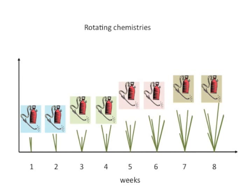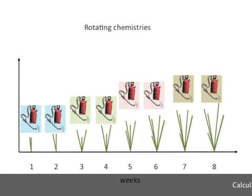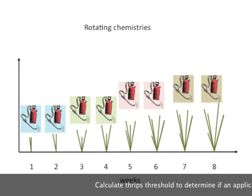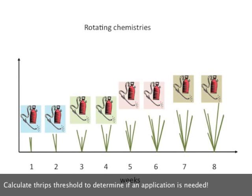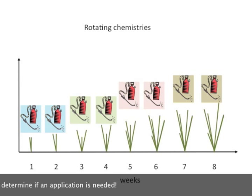By changing the type of insecticide applied every two weeks, you change the way you kill insects. In this way, you can reduce the chances that thrips will become resistant to any one class of insecticides.